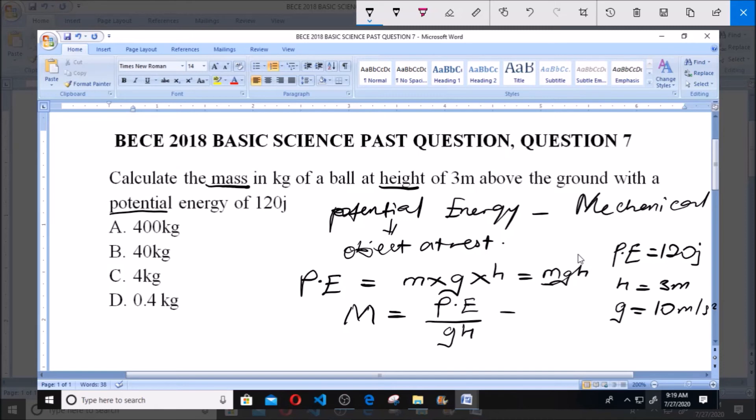And this will give us 120, which is our potential energy, all over 10, which is our acceleration due to gravity, times 3, which is the height.